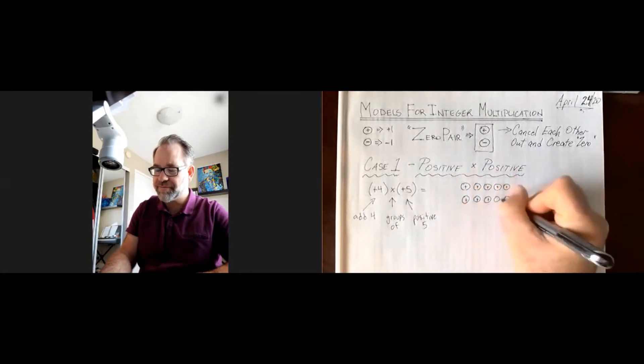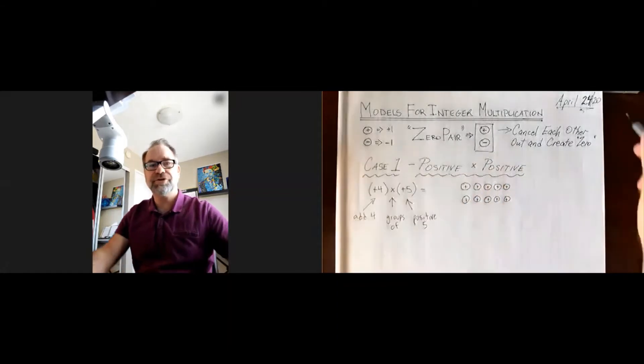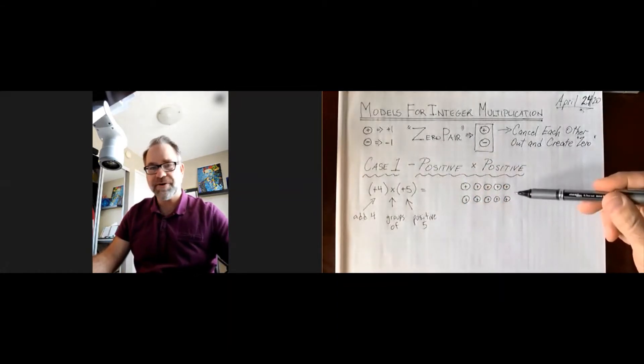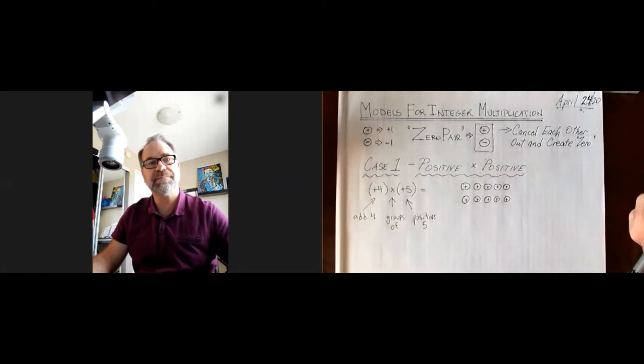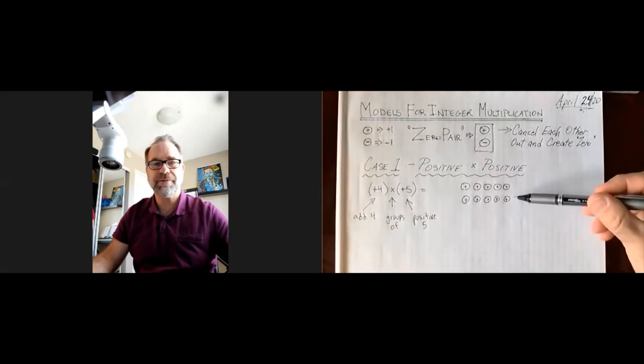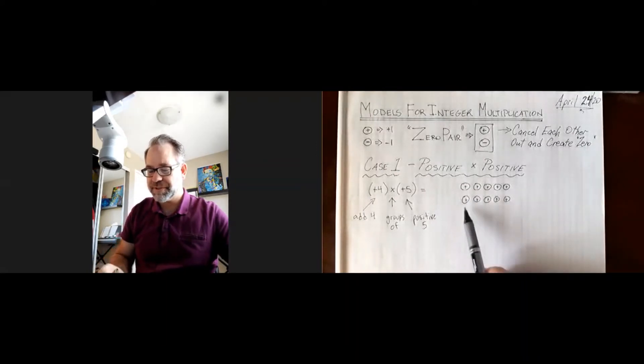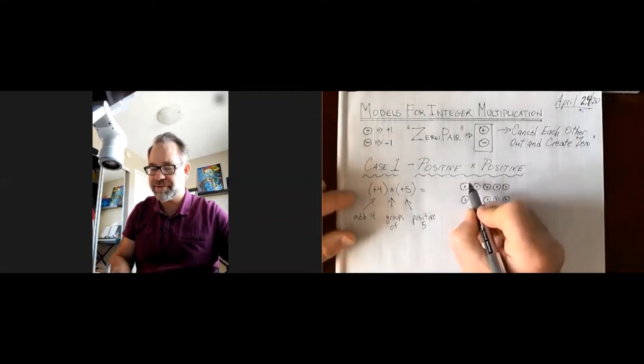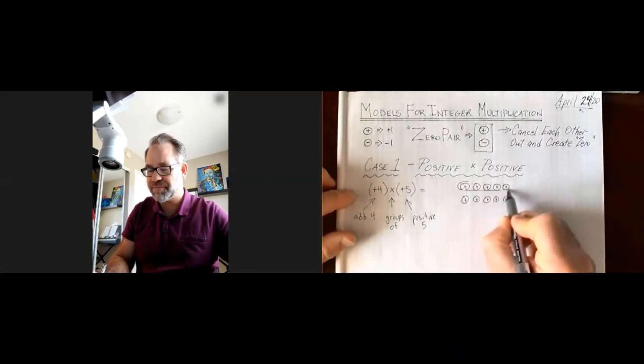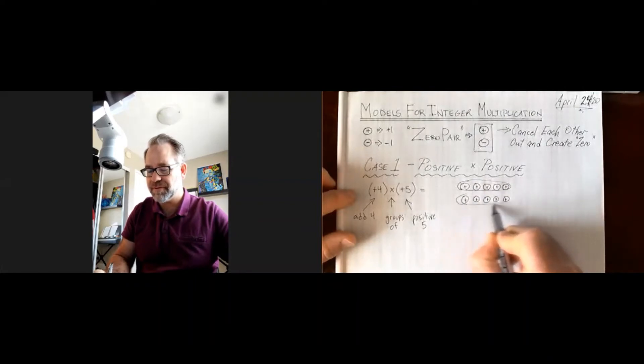Right now we have two groups of positive 5. I want you to stop and just think what multiplication sentence do you think this shows right now? Well, if you said two groups of positive 5 or positive 2 times positive 5, you're absolutely right.